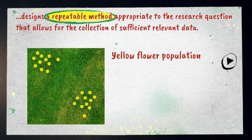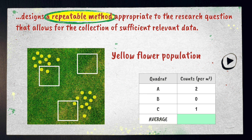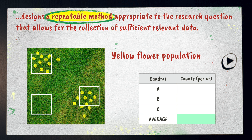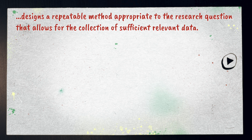What about getting the same results? Imagine your investigation involves estimating the population of yellow flowers. Your method describes selecting three areas at random to place your quadrat. You sample these three particular places and there are two, zero, and one flowers within each quadrat, giving you an estimated abundance of one flower per square meter. If someone else comes along and repeats your method, they might randomly select different areas and conclude an average of five flowers per square meter. In short, the method is not repeatable because your sampling strategy — collecting only three samples — is not appropriate.